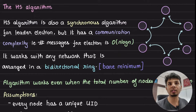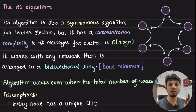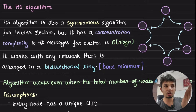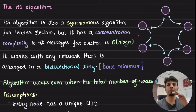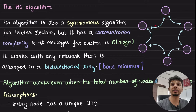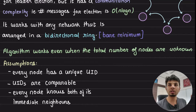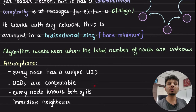Although this algorithm works on many topologies, the bare minimum expectation is that every node knows both of its neighbors — its left and right, or clockwise and anticlockwise neighbor — forming a bidirectional ring structure. The algorithm also works when the total number of nodes in the network is unknown. The only assumptions are that every node has a unique UID which are comparable, and every node knows both of its immediate neighbors.